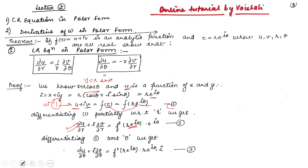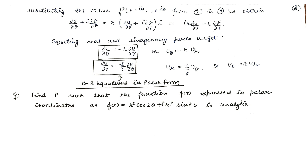Now differentiating with respect to θ we get a third equation. Equating the second and third equations, we obtain: ∂U/∂θ + I·∂V/∂θ = R·I·(∂U/∂R + I·∂V/∂R). Equating real and imaginary parts gives us both CR equations: ∂U/∂θ = −R·∂V/∂R and ∂U/∂R = (1/R)·∂V/∂θ. So we have derived the two CR equations in polar form.